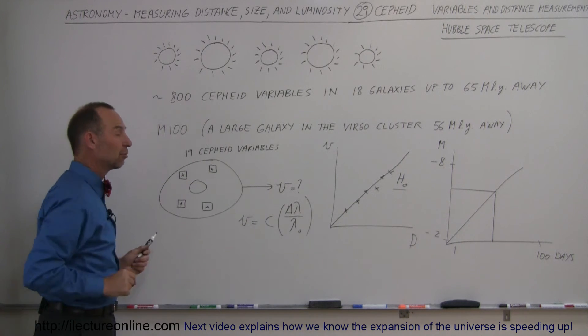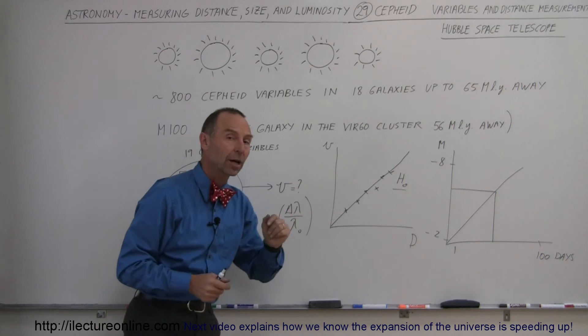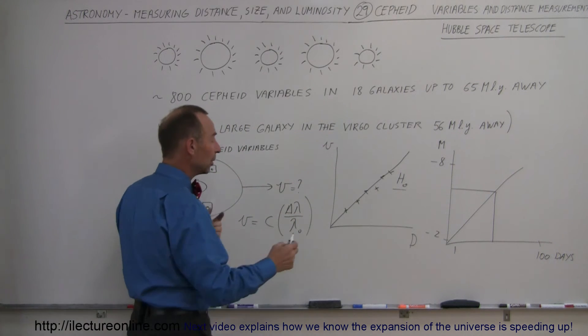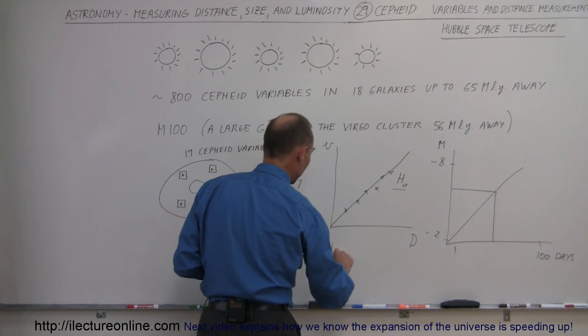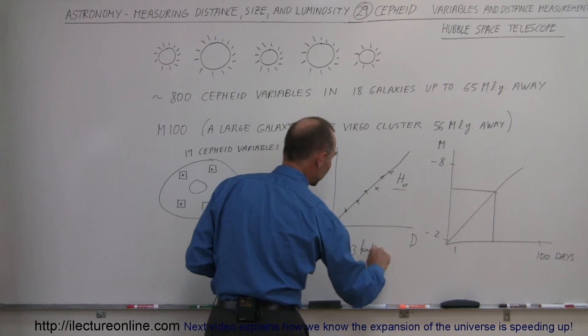And then also by measuring the velocity very accurately, we're able to come up with a very nice curve for the Hubble constant. In the end, with all this work with the Hubble telescope, the Hubble constant came out to be about 73 kilometers per second per megaparsec.